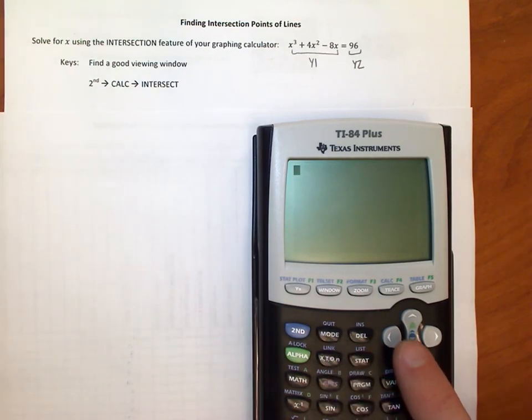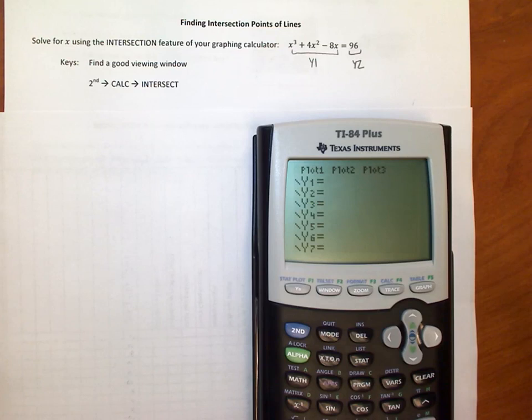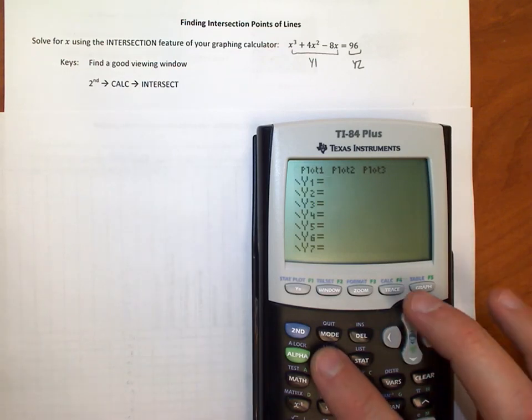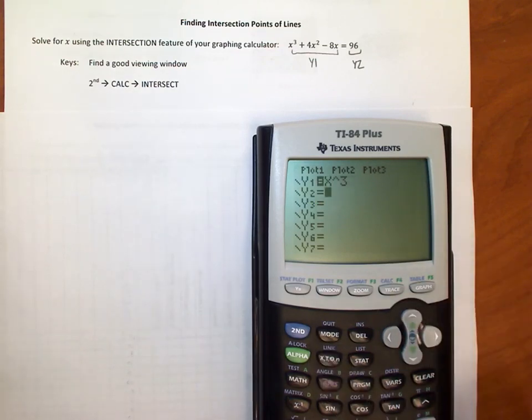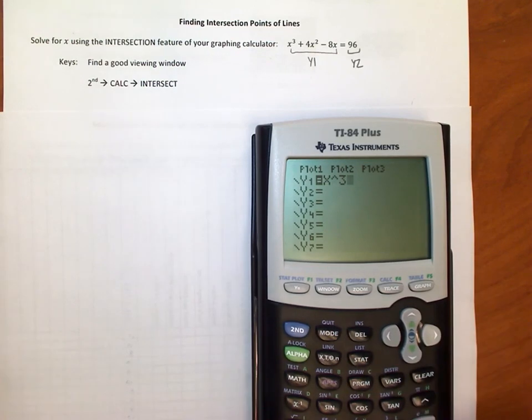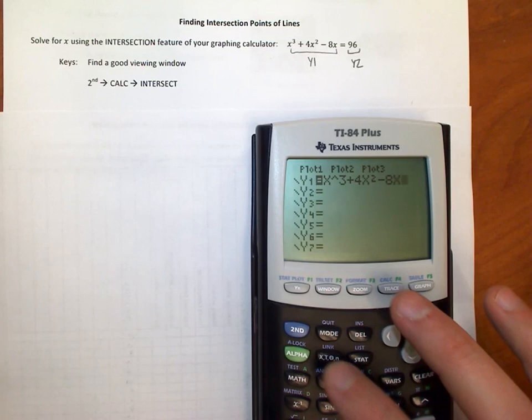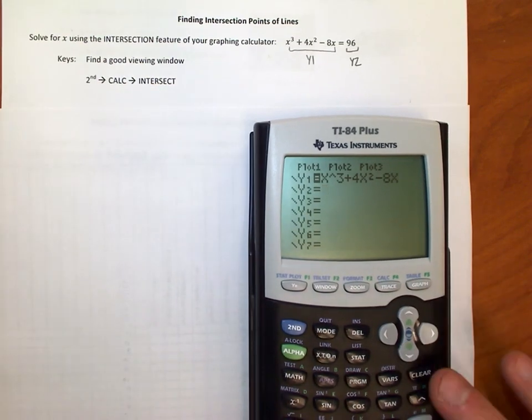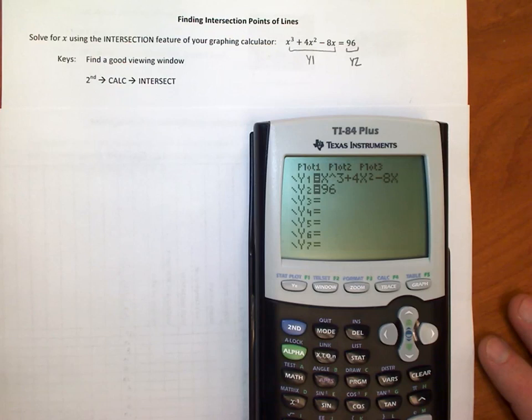But I can't type it in the main screen, I need to go to y equals, and I'm going to type my two equations in. So on the left side, I get x cubed plus 4x squared minus 8x. That's y1. The right side is y2, that's 96.